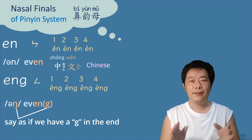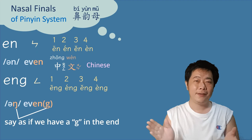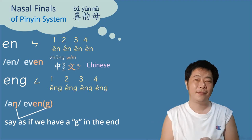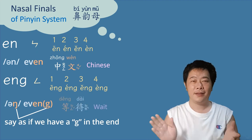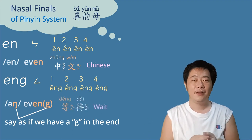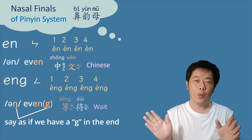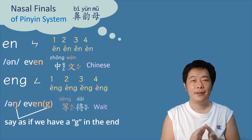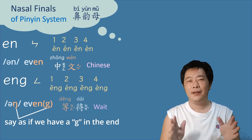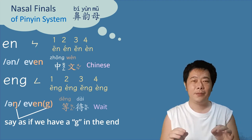中文 means Chinese. 等待 means 'wait' — děng dài. Easy, right? From now on, the difficulty will be increased a little bit.